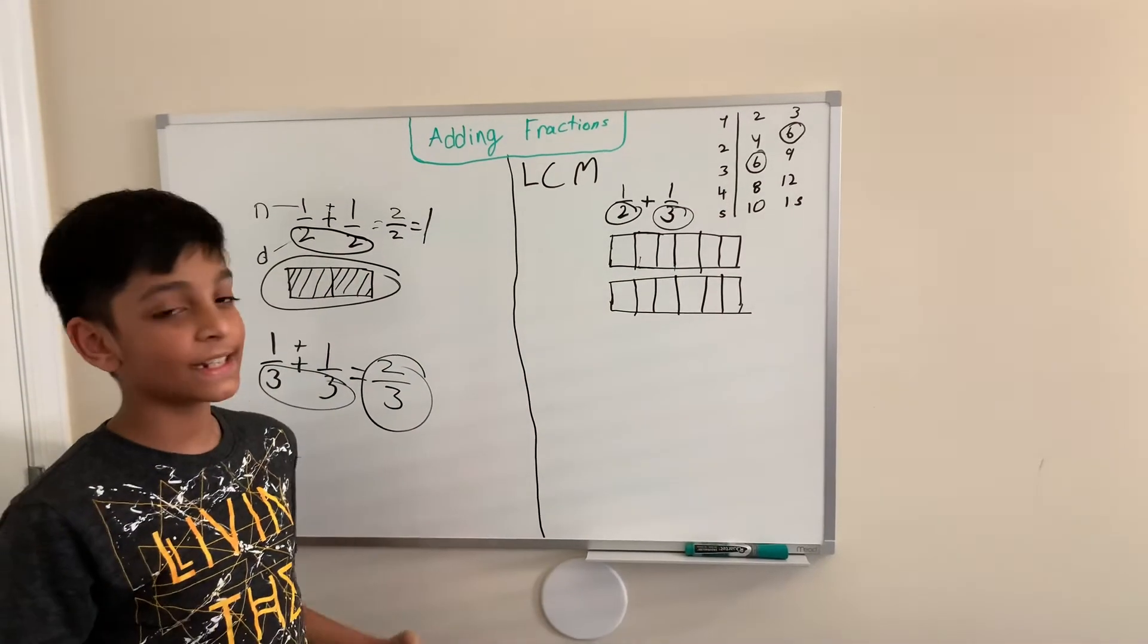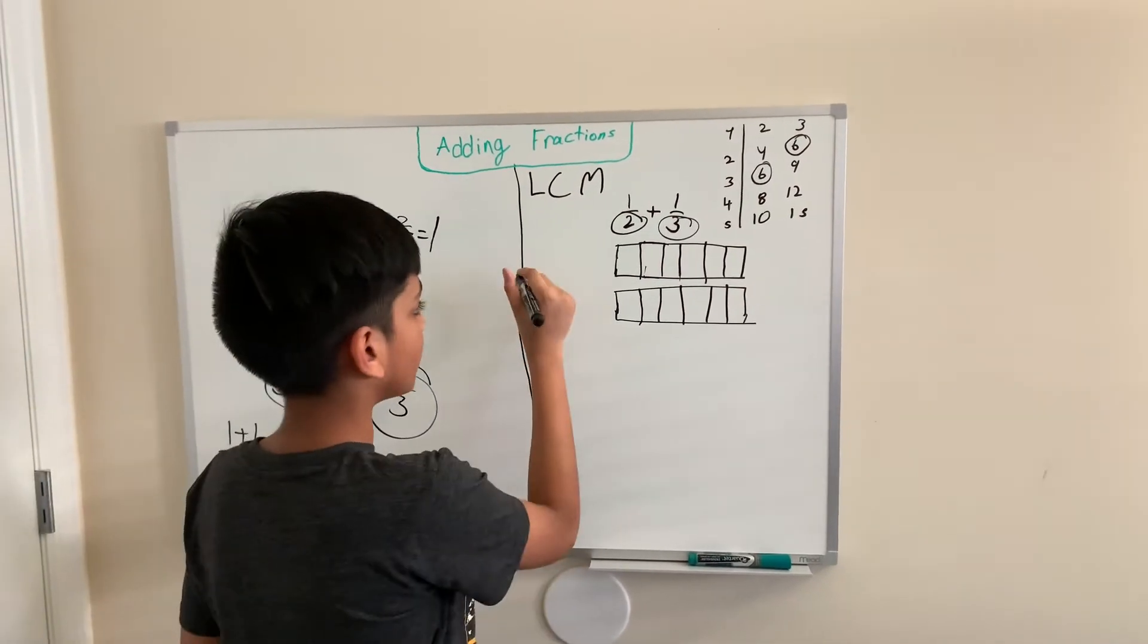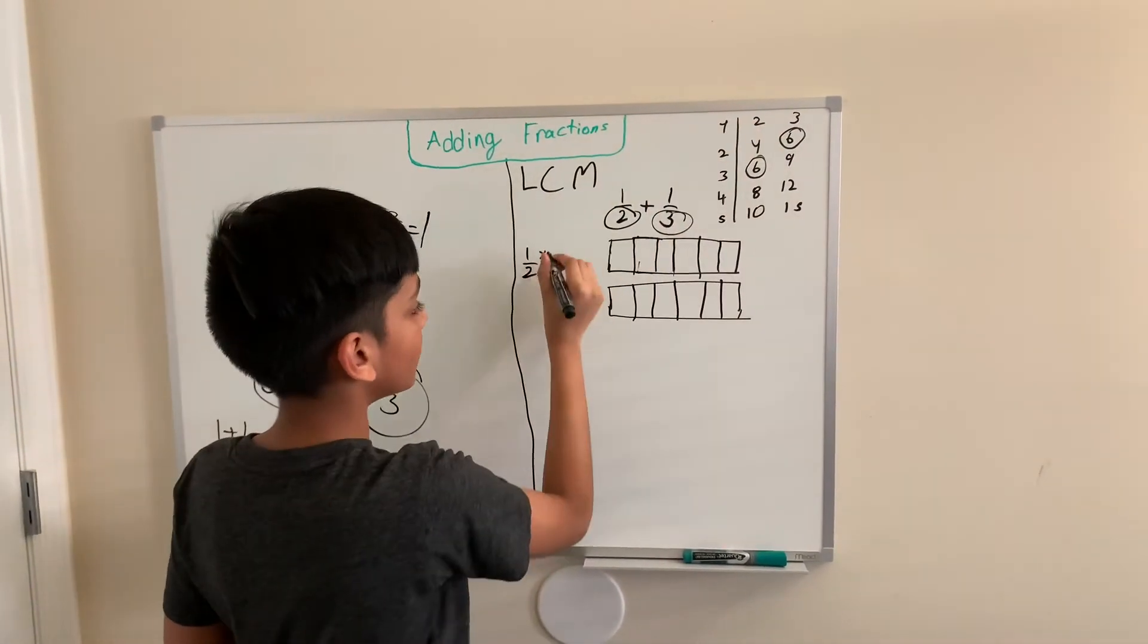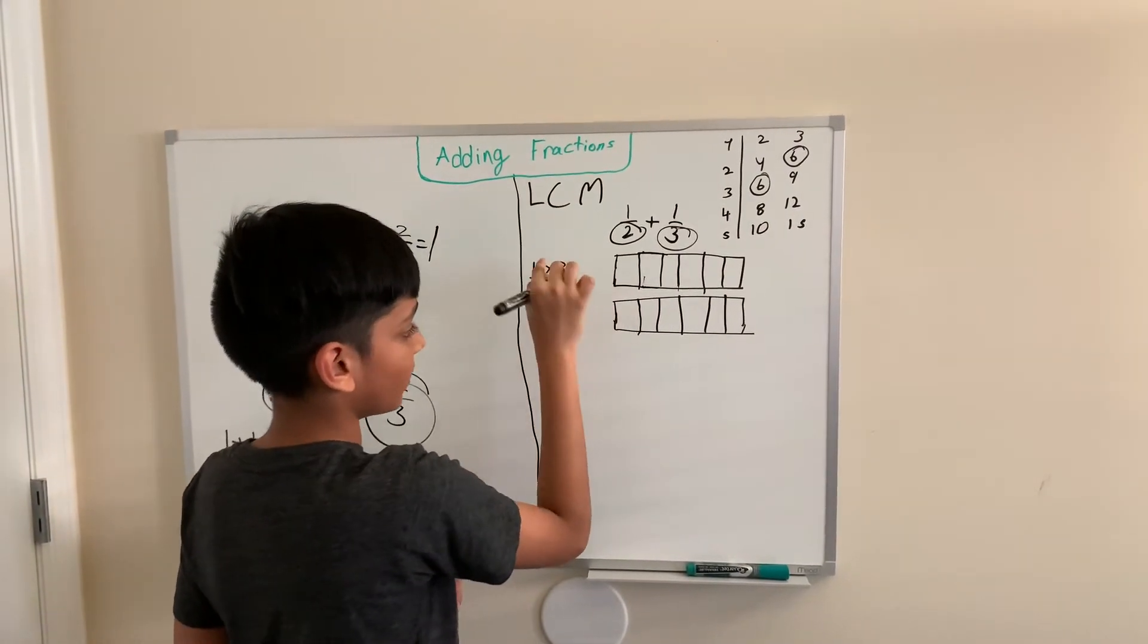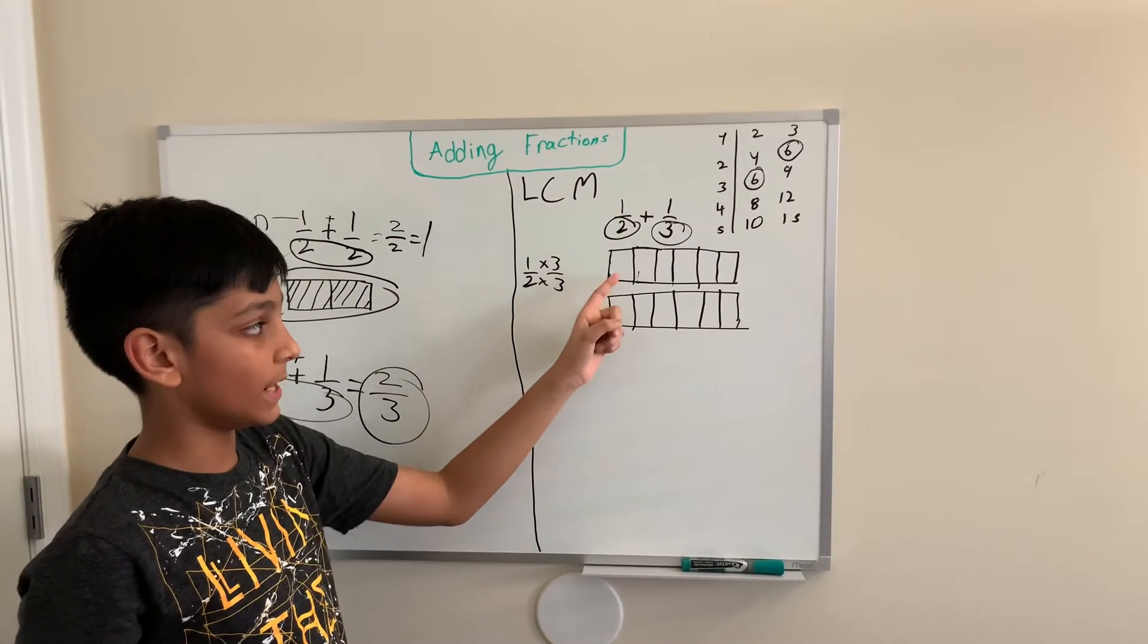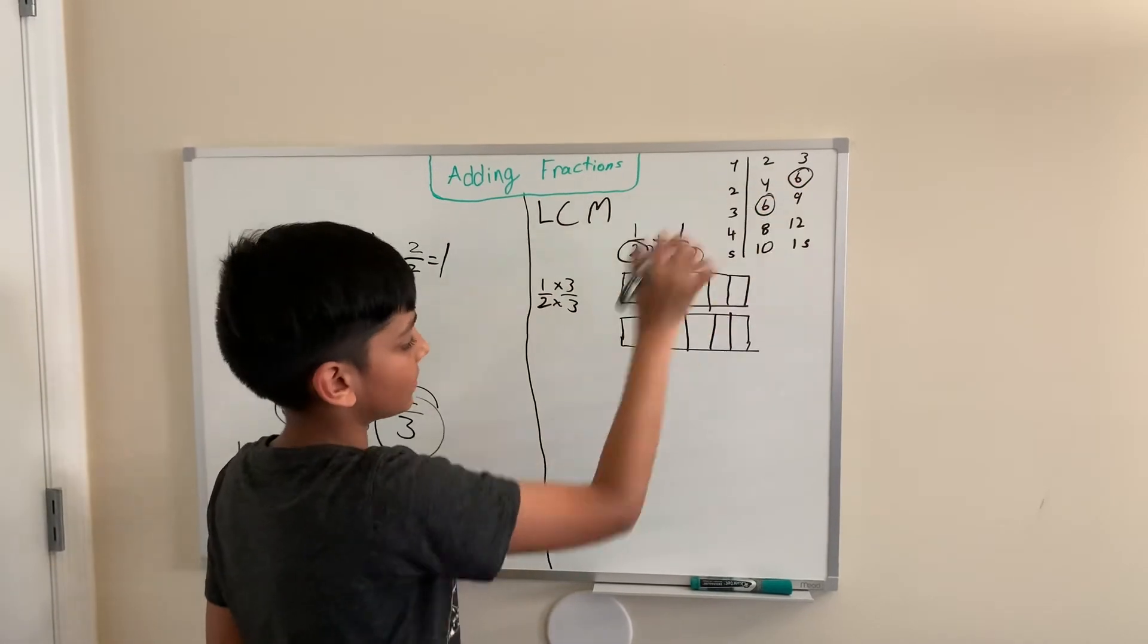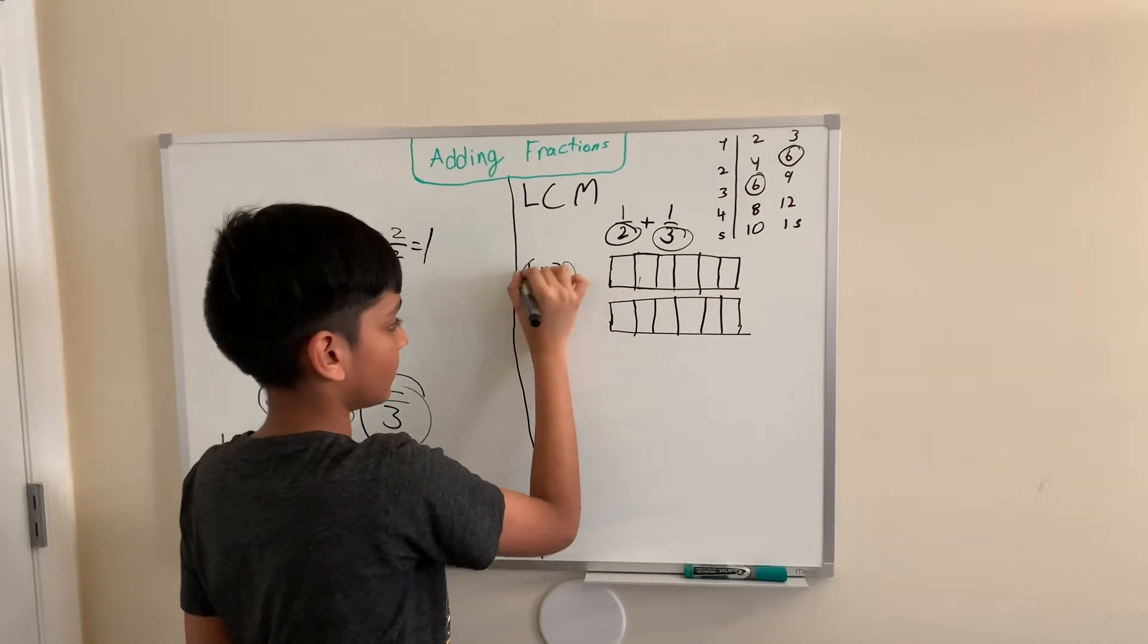If we didn't have the drawing there, what we would do is write down our numbers, and then we would actually have to multiply them by what row they're on. For 2, it's times 3, so we would multiply it by 3, both the numerator and the denominator. For 3, we'll put that in parentheses, and since it's on the second row, times 2.